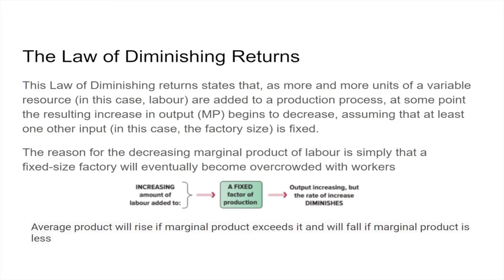Average product will rise if marginal product exceeds it. If marginal product is still going up, average product is going to go up. This makes sense: if you wrote an exam and got 50, then wrote another exam and got 100, that's going to drag up your average. So basically, average is going to go up as long as marginal product is higher than the average.